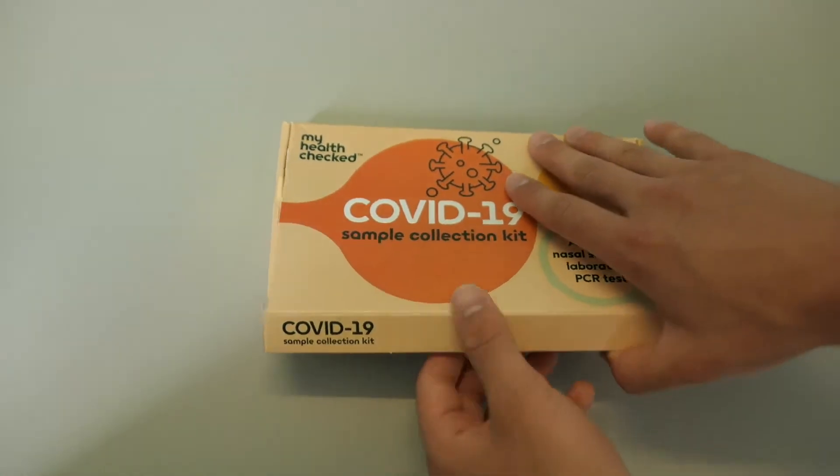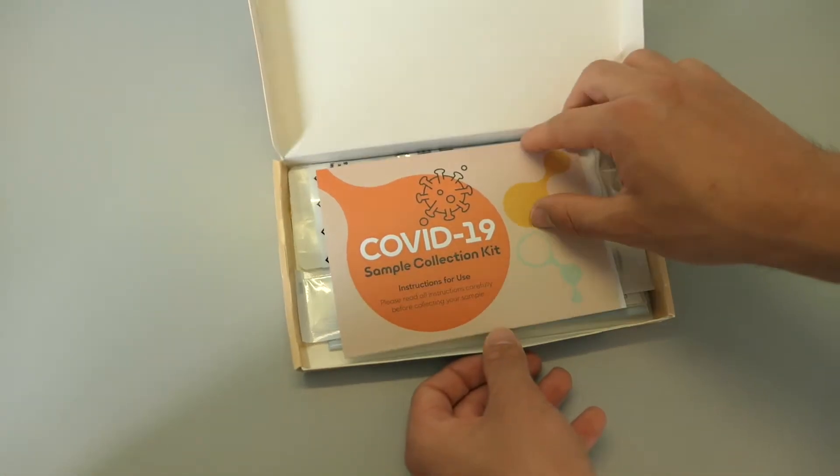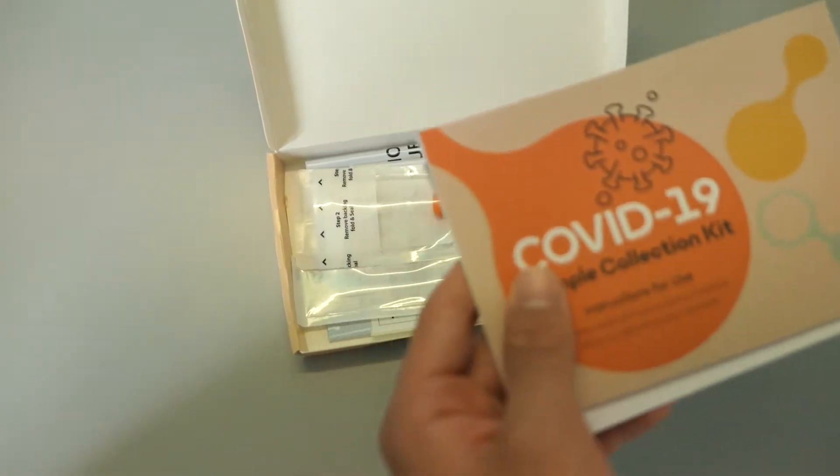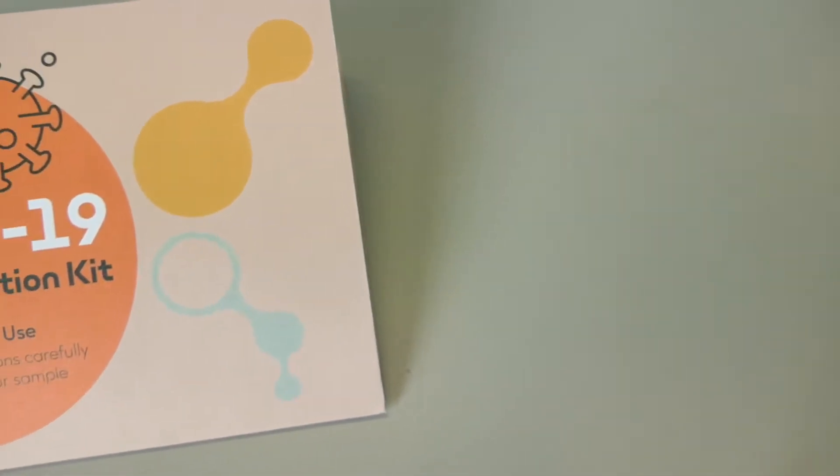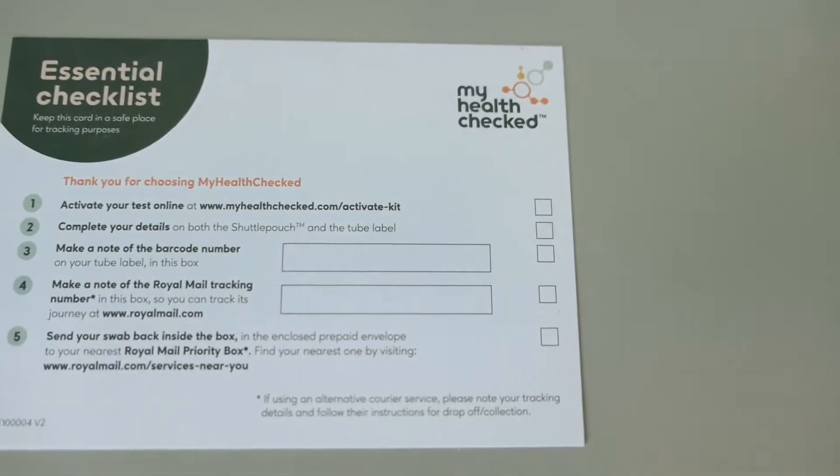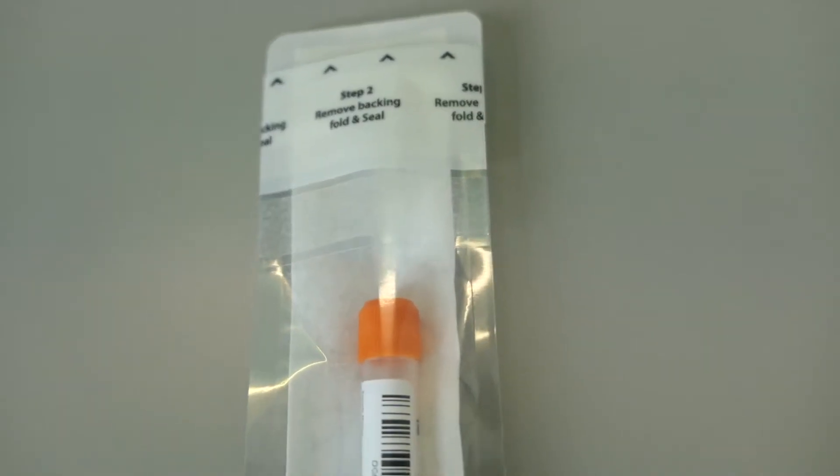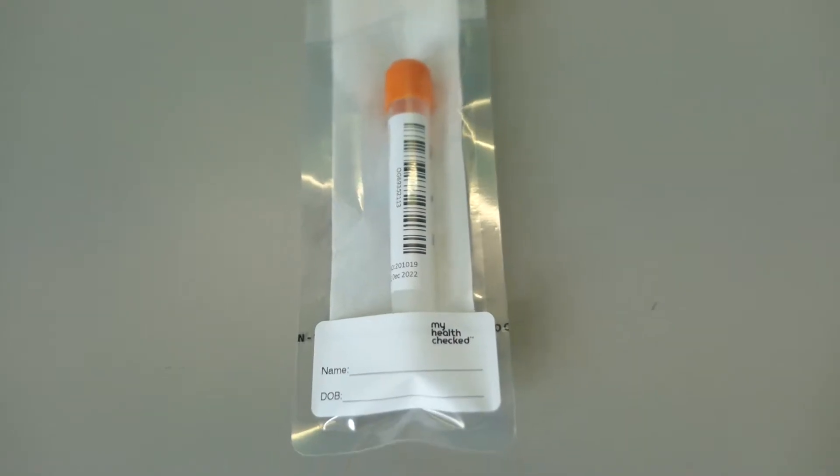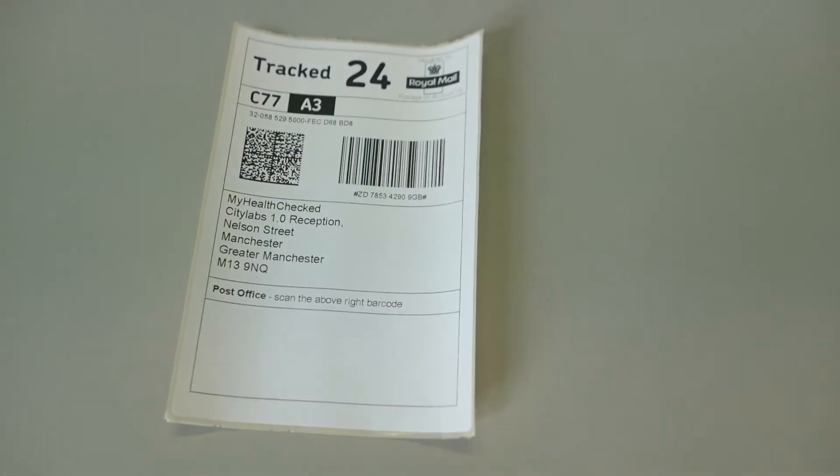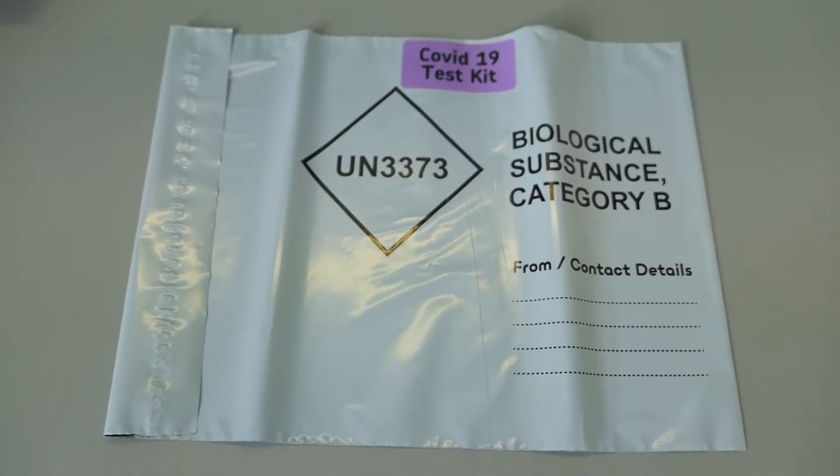After activating your test, you should open your test kit and check if your sample collection kit contains the following: a nasal swab, the instructions for use, an essential checklist card, a tube inside a biohazard bag, and a prepaid tracked 24 Royal Mail return envelope.